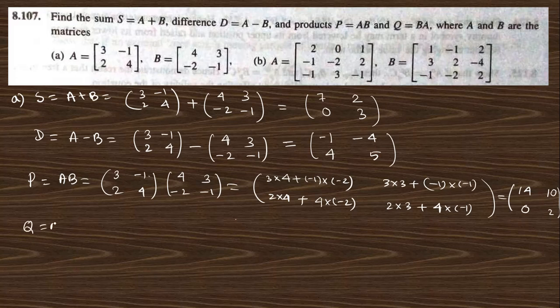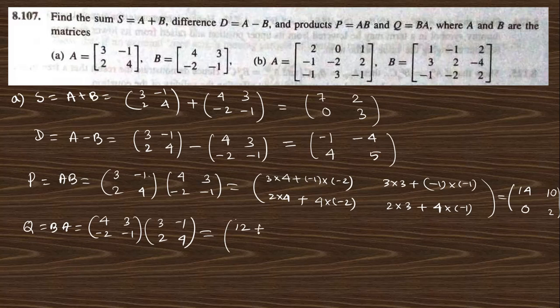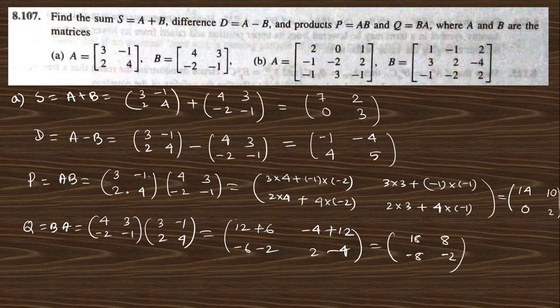Next, go to question B, where we need to find the same things for the 3x3 matrices. The sum A + B: A is [2, 0, 1; -1, -2, 2; -1, 3, -1] plus B is [1, -1, 2; 3, 2, -4; -1, -2, 2]. Adding term to term gives [3, -1, 3; 2, 0, -2; -2, 1, 1].